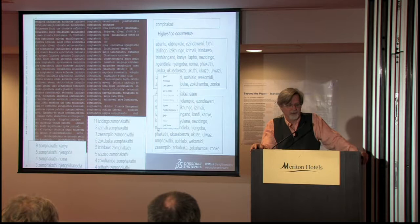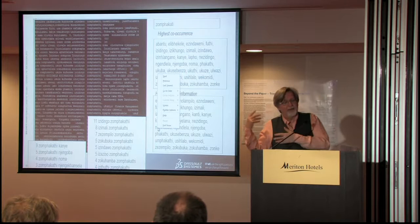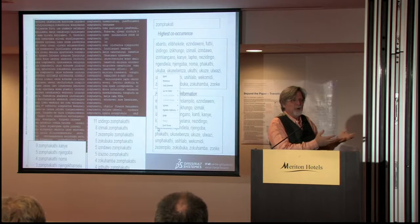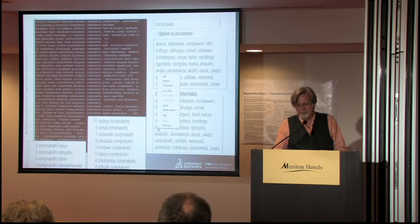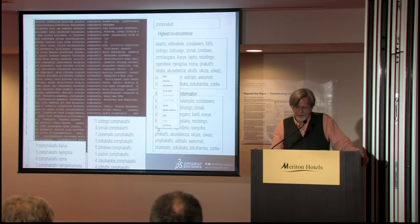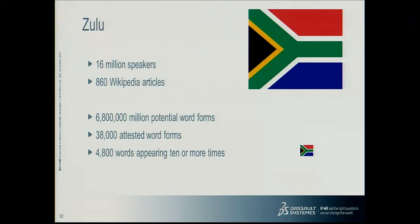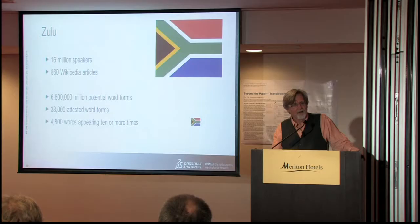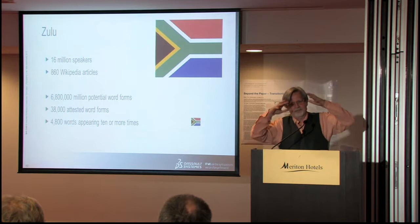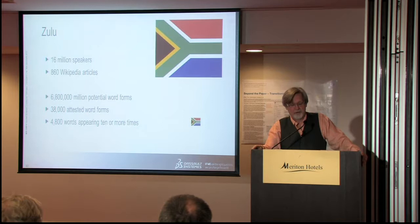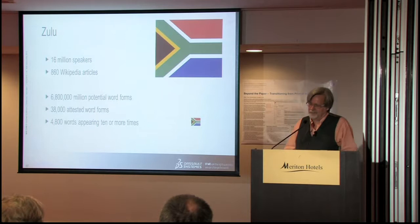On one hand it would be nice to have this for Zulu, and it isn't available on the internet, and it could be done automatically — all the steps are automatic. This can be done for languages like Zulu, but it's still poor, as you can see. To sum up for Zulu: we have 16 million speakers, 860 Wikipedia articles, 7 million potential word forms, and we only attest 40,000 of those word forms on the web. Of those 40,000 word forms, only 5,000 appear 10 times or more. So if you want to build some type of automatic cloud or sketch of those words, it's a small percentage of the language. Though it's a big community, you have limited information on the web — but you do have some information. This is actually one of the luckier languages.